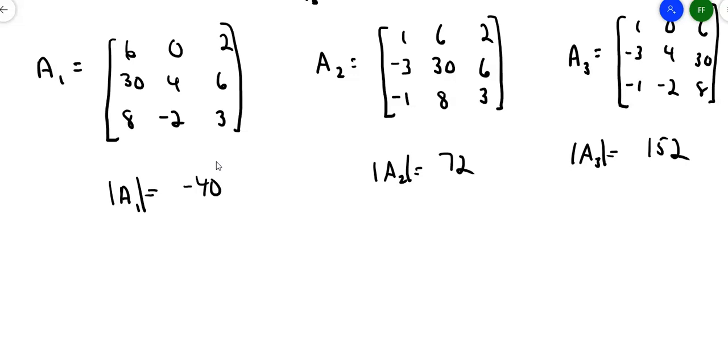How do you find those three values? Well, the X sub 1 becomes the determinant we just found over the determinant of the original. X sub 2 is the determinant of the matrix we found over the determinant of the original. And X sub 3 is the one we found over the determinant of the original.